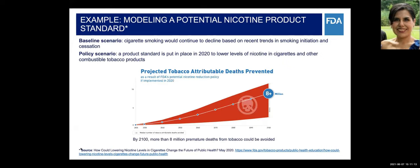Regarding mortality estimates, this plot shows the projected tobacco-attributable deaths prevented as a result of the FDA potential nicotine reduction policy implemented in 2020. By 2100, more than 8 million premature tobacco-related deaths could be avoided, considering all assumptions and input parameters starting from the 2015 baseline.